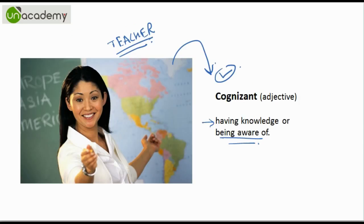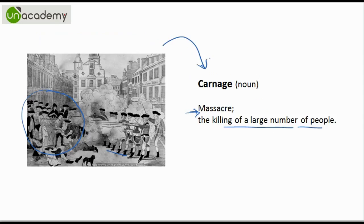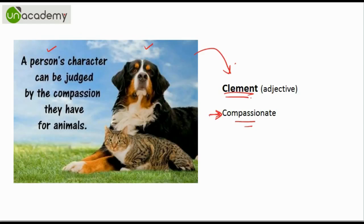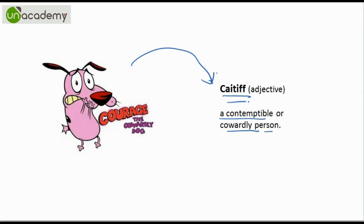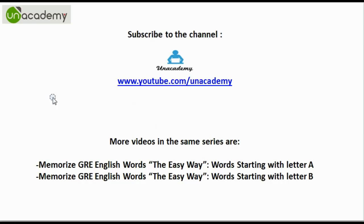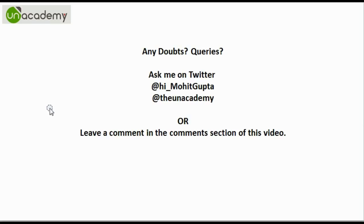So these were the quick 10 words starting from the alphabet C that we discussed here. You can subscribe to the channel youtube.com/anacademy for more videos in this series on memorizing GRE English words the easy way. We are already done with A, B, and C, and you can watch the previous videos in the playlist. If you have any doubts, queries, or suggestions, you can ask me on Twitter at hi_MohitGupta, or tweet to the academy, or simply leave a comment in the comment section. Thank you, thanks a lot for watching.